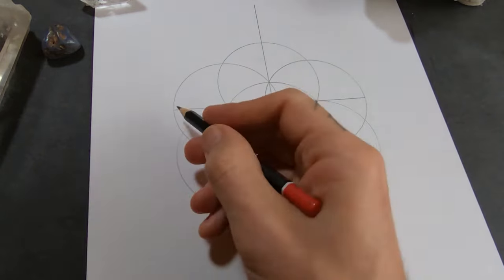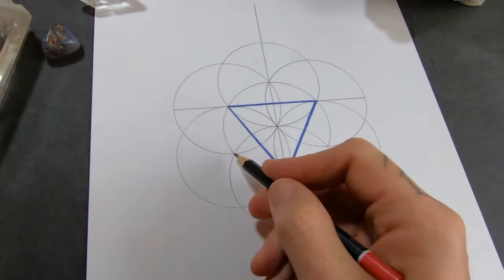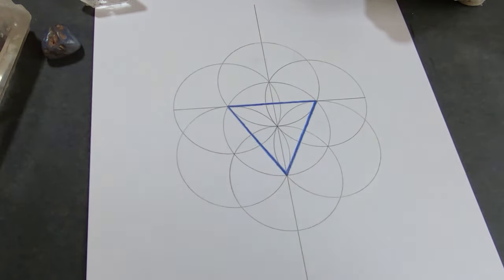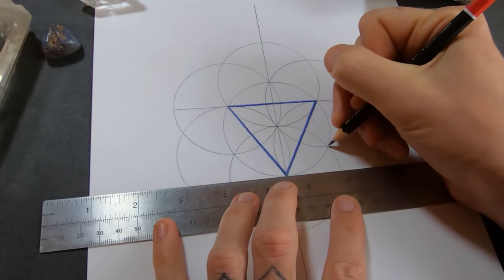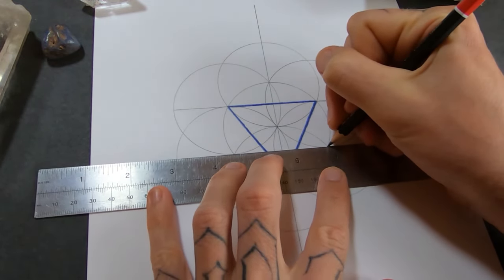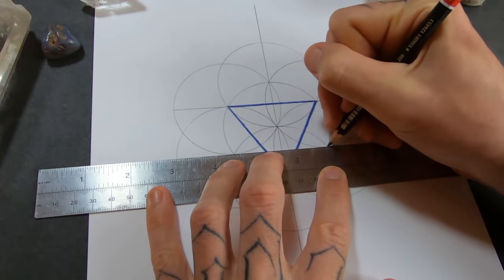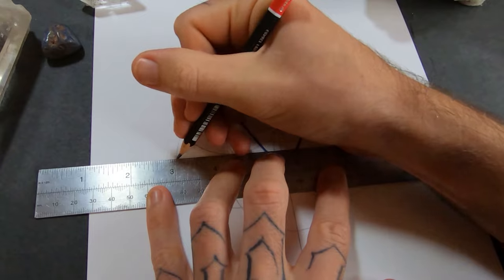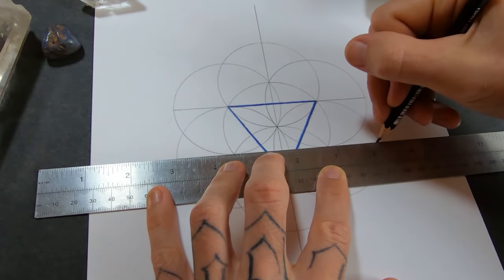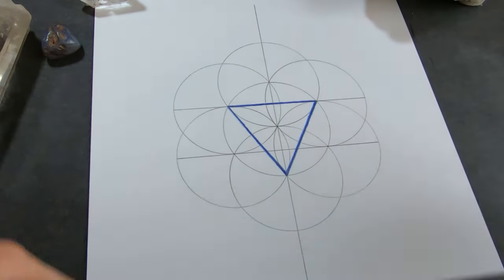So we've got this line at the top and I want to do the same thing on the bottom. So I'll just connect this point to this point and go right to the edge of the seed of life symbol so it mirrors the top.